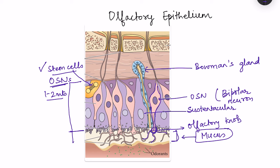The receptors for odorants are present on the cilia of the olfactory sensory neurons. Odorants need to cross the mucus to reach these receptors, which is brought about by odorant binding proteins present in the mucus. These odorant binding proteins bind the odorants, concentrate them within the mucus, and help them cross to reach the cilia.